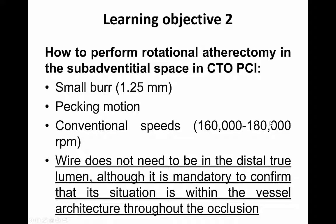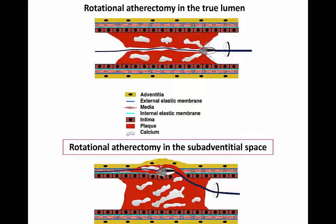How do we perform rotational atherectomy in the subadventitial space in CTO-PCI? First, we must use a small burr — 1.25mm — because we are in a very thin layer of tissue. We use standard rotablator instructions with a pecking motion at conventional speed, 160,000–180,000 RPM. Importantly, although the wire does not need to be in the distal true lumen, we must absolutely confirm that the guidewire is within the vessel architecture throughout the occlusion, otherwise there is a very high risk of perforation. This picture shows the differences between rotational atherectomy in the true lumen in a conventional lesion versus rotational atherectomy in the subadventitial space in a CTO.